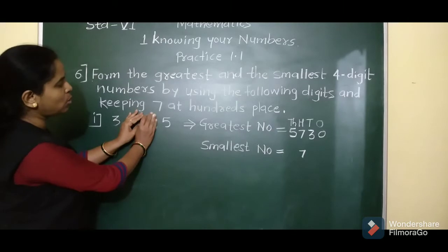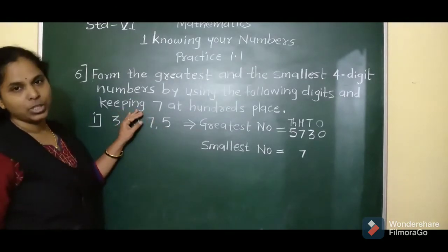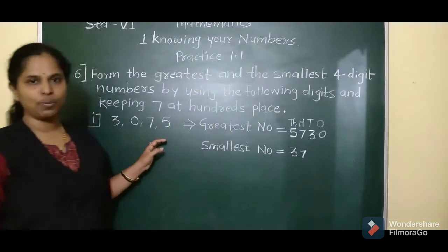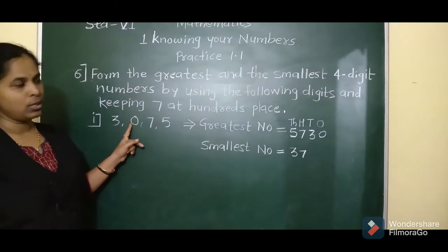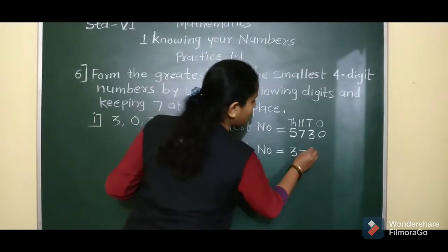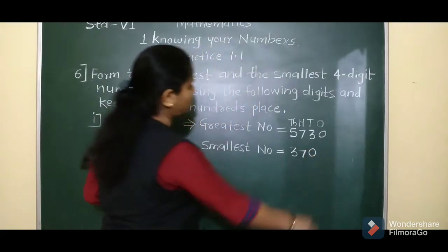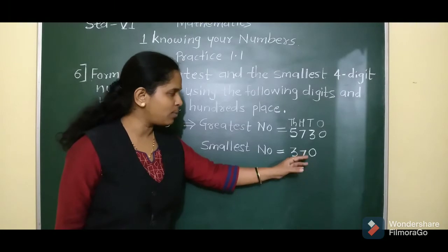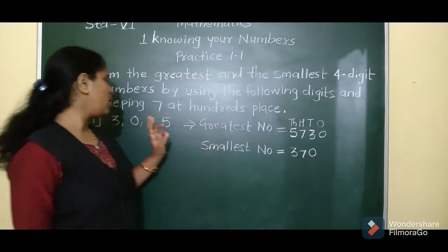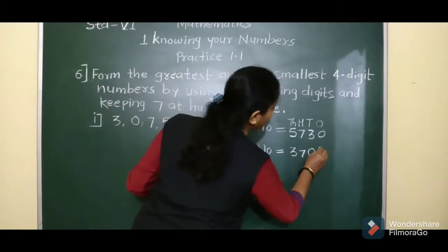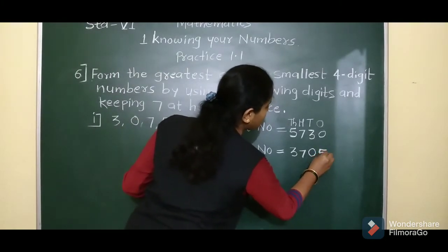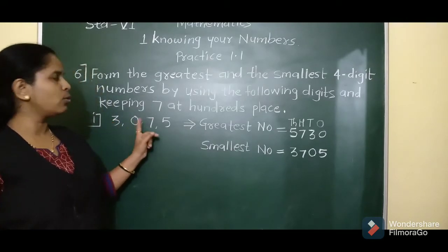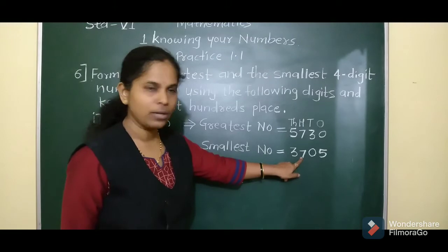Leaving out 0 and 7 (which is fixed), from the remaining digits 3 and 5, the smallest is 3. So 3 goes at the thousands place. Then 0 is the next smallest, so it goes at the tens place. The remaining digit 5 goes at the ones place. So the smallest number formed using digits 3, 0, 7, 5 is 3,705.